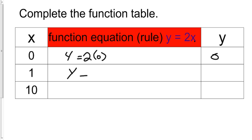Y equals two times one. So two times one is two. Y equals two times 10. And that would mean my output is 20. Our function table is complete.